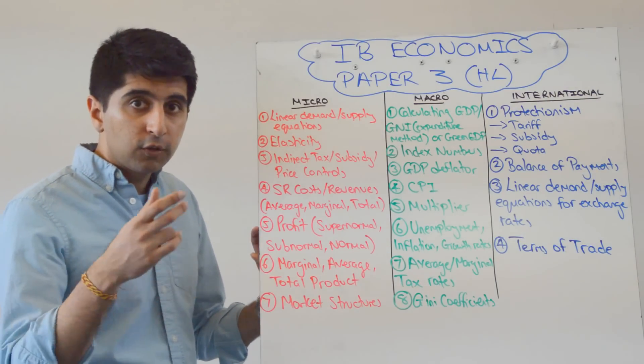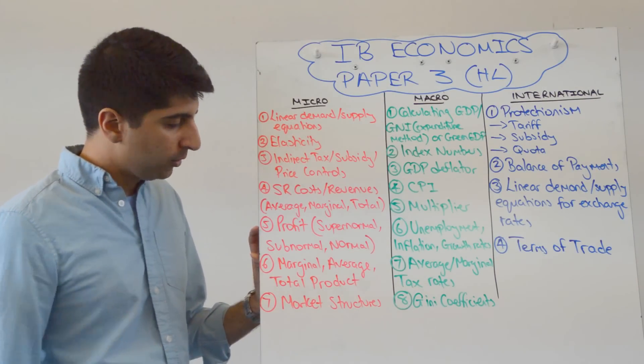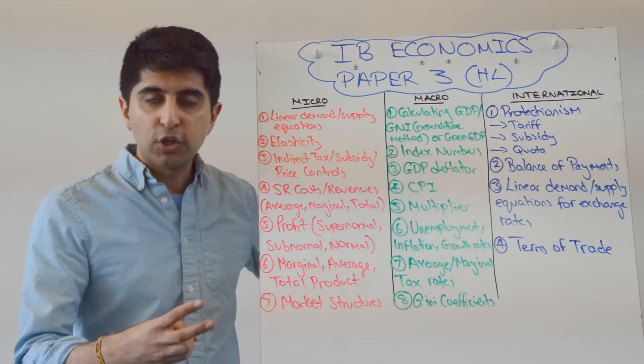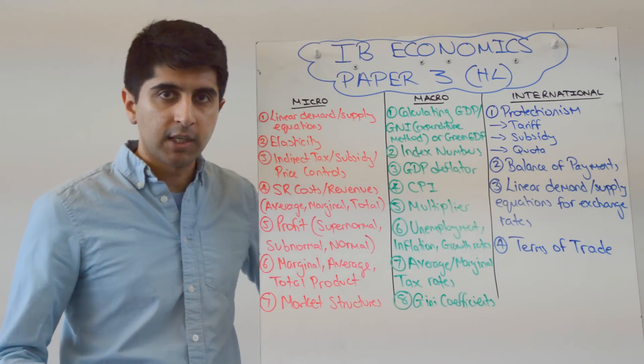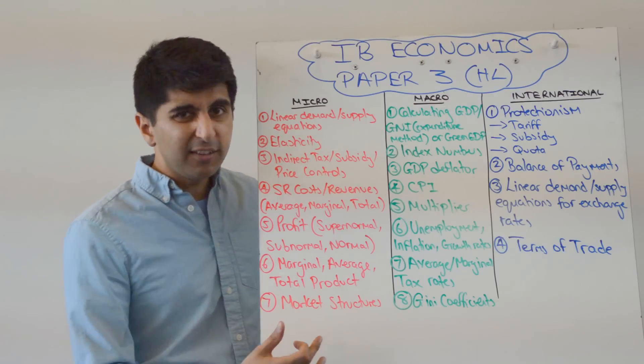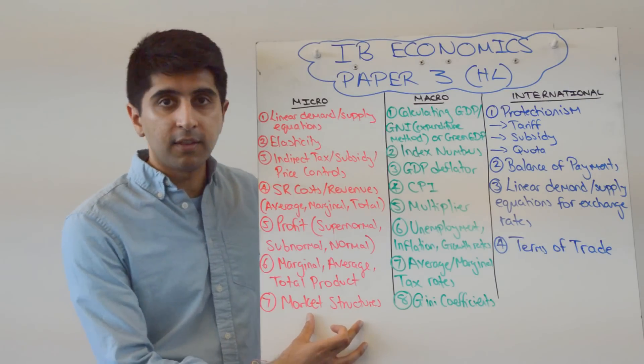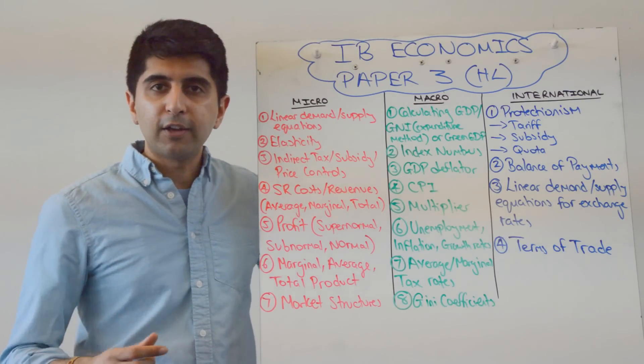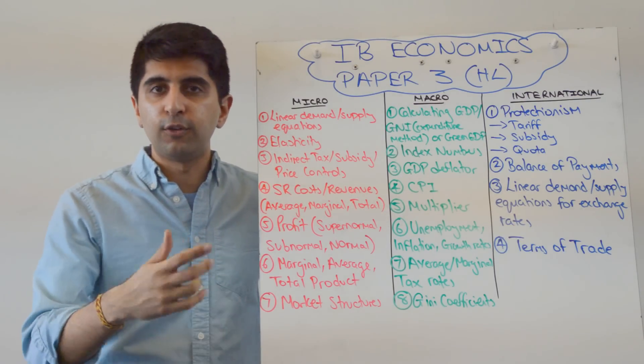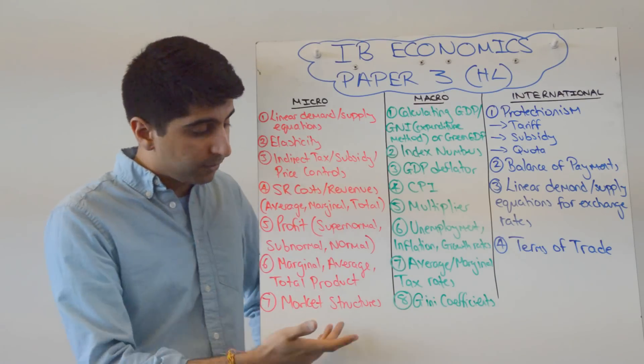Your profits, super normal, sub normal, normal. They can ask you that. Your marginal, average, and total product with respect to law of diminishing marginal returns. And anything to do with market structures. They'll ask you maybe to draw your diagrams. They'll put numbers to the diagrams. You have to do certain calculations. So absolutely, for sure.